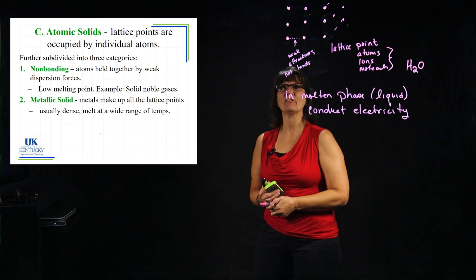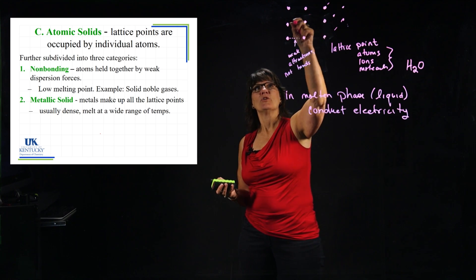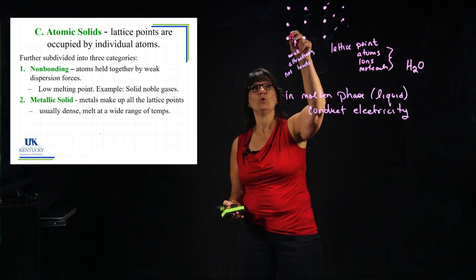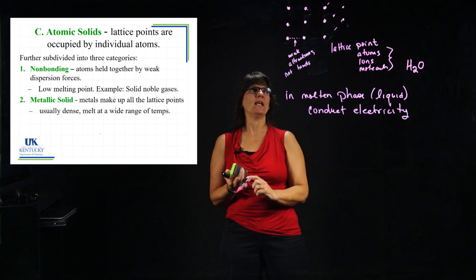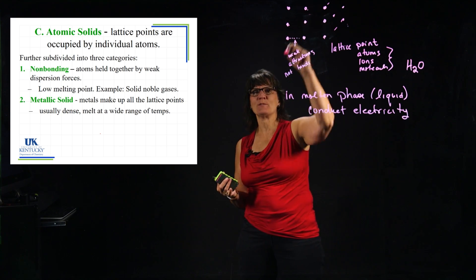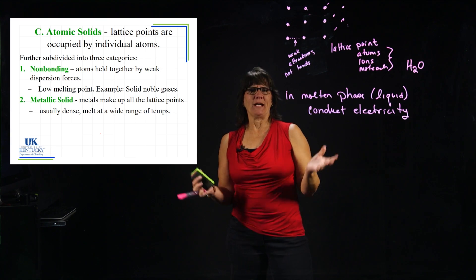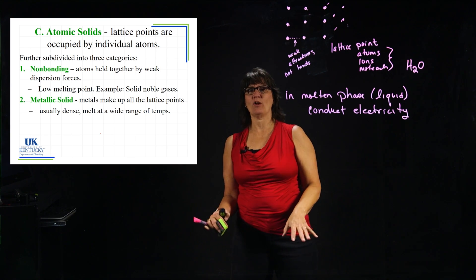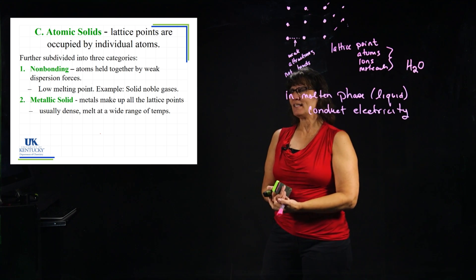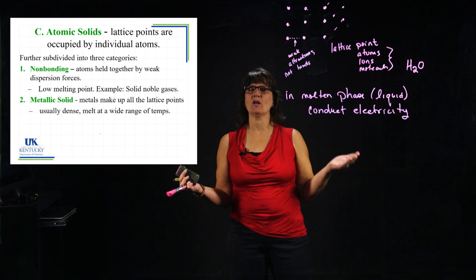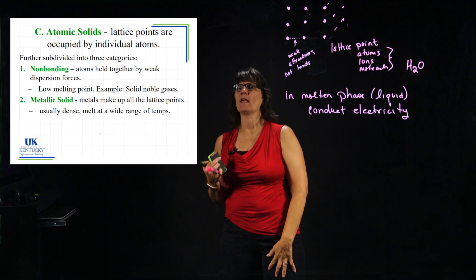The next subcategory is the metallic solid. Each one of these lattice points is a metal — this could be all the same metal, like gold atoms throughout, or it could be an alloy like bronze, which is a mixture of metals, but each lattice point is still a metal. These things tend to be very dense, but they melt at a wide range of temperatures. We cannot pigeonhole a metallic solid into a category based on melting point alone.